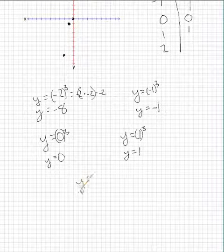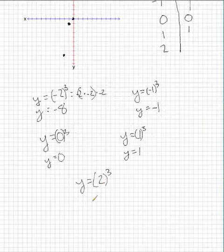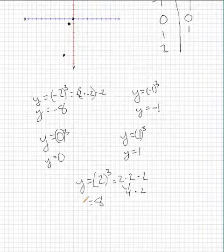And then we have y equals 2 cubed, so we plug in 2 for x. That's 2 times 2 times 2, which is 4 times 2, which is 8. So y equals 8 when x is 2.